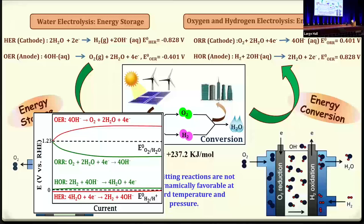What happens is that the reaction does not proceed with just 1.23 volts. You require an overpotential because there is inherent activation of the electrodes, and problems with the electrodes, solvents, and electrolytes. Due to this overpotential requirement, the OER reaction is very sluggish, and you require a catalyst.